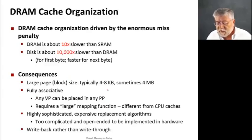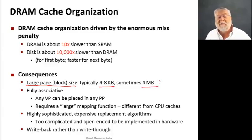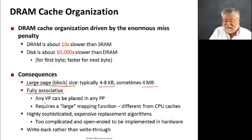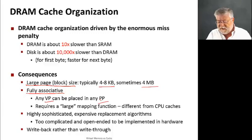In the case of virtual memory, our page size is much larger — the block size is much larger. Typically four to eight kilobytes, could even be as high as megabytes. Another thing we're going to do is make the cache fully associative. We're not going to worry about direct-map caches or set-associative caches — we'll make it fully associative. That way we can place any virtual page in any physical page, which requires a more sophisticated and larger mapping function than those CPU caches.